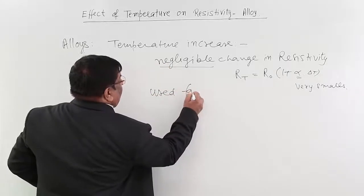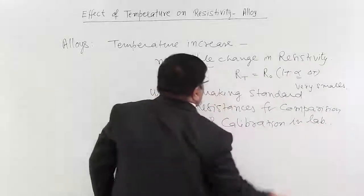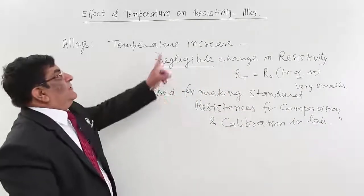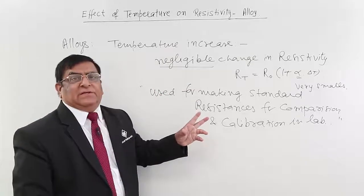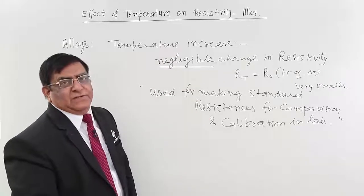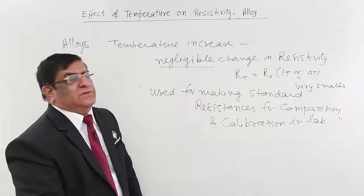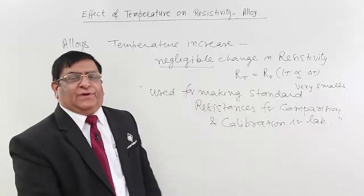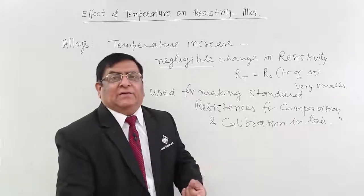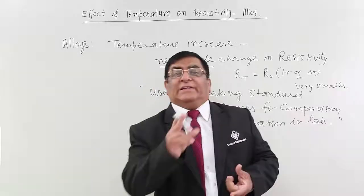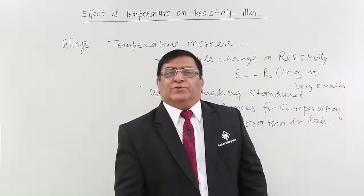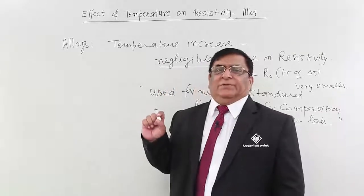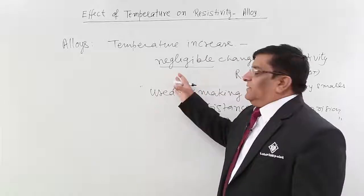Making standard resistances is the very main use of alloys. Many exam questions are asked on this topic: 'Why are alloys used for making standard resistance?' — you know this answer now. Another question: 'What is used in standard resistance?' — the answer is alloys are used in standard resistance, for the property of negligible temperature coefficient of resistivity.